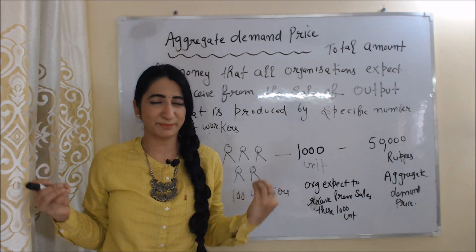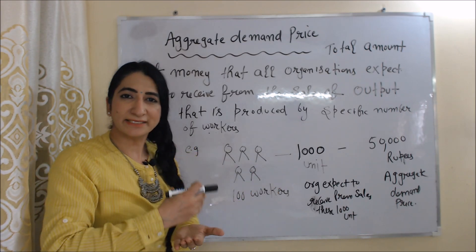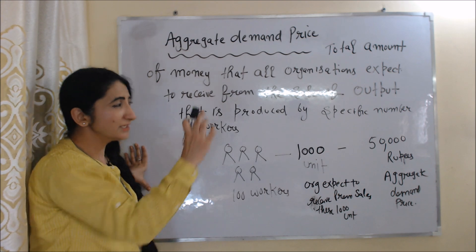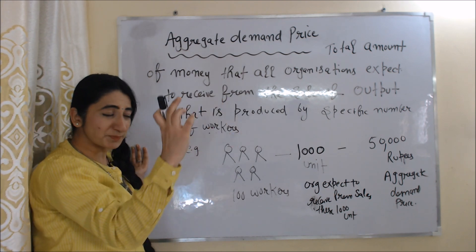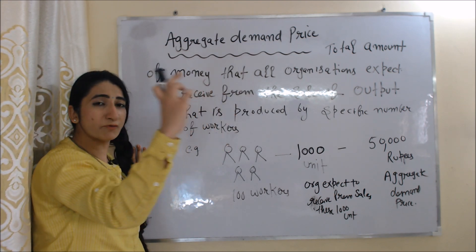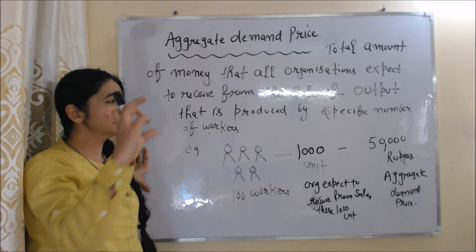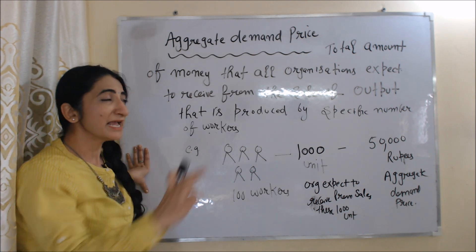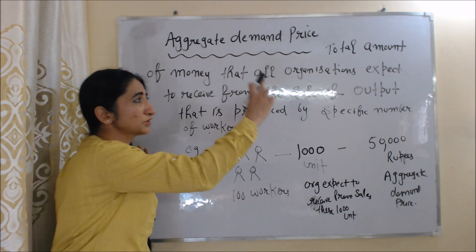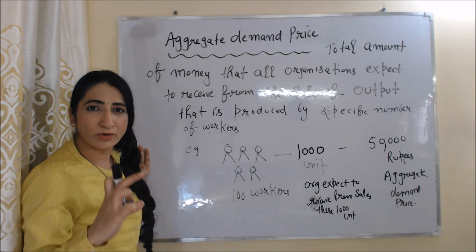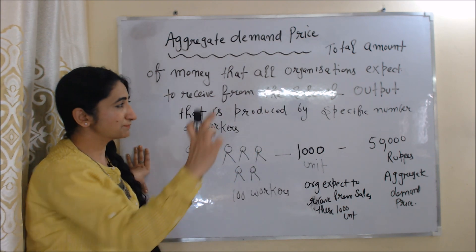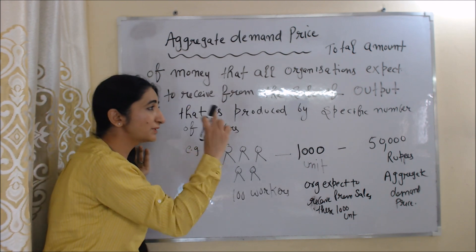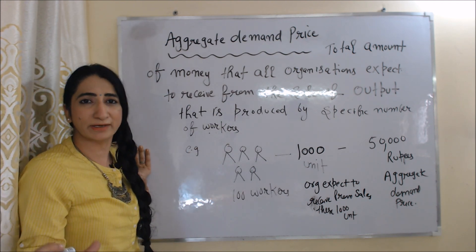What is aggregate demand price? Aggregate demand price is the total amount of money that all organizations expect to receive from the sale of output that is produced by a specific number of workers.